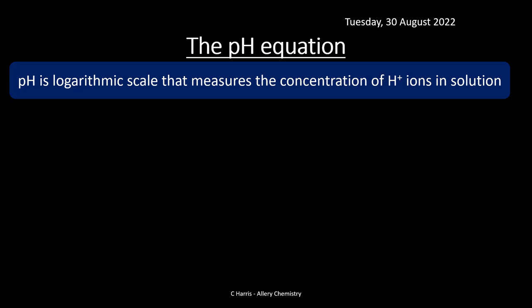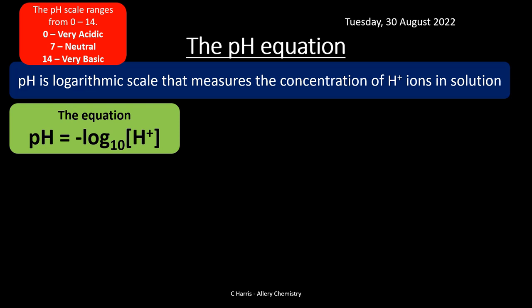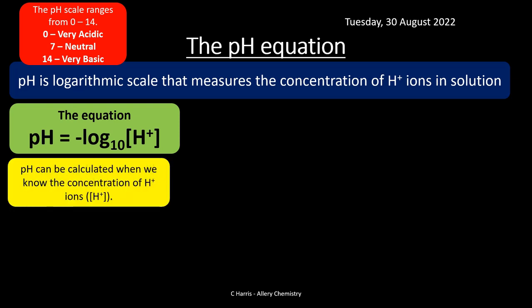For those who have done maths, you've probably heard of a logarithmic scale. If you don't study maths, don't worry — there's a calculator that will massively help you. The pH scale ranges from 0 to 14: 0 being very acidic, 7 being neutral, 14 being very basic. The equation is the important bit: pH = −log₁₀[H+]. So pH can be calculated when we know the concentration of H+ ions in solution.